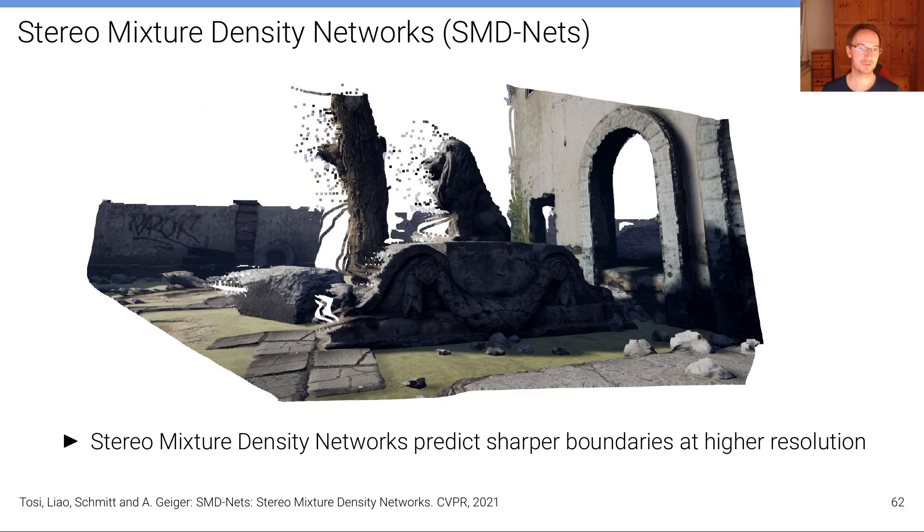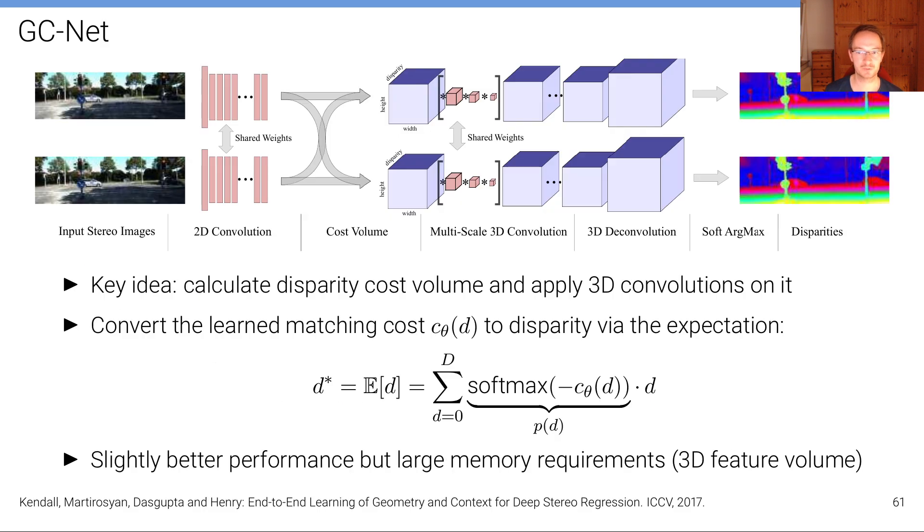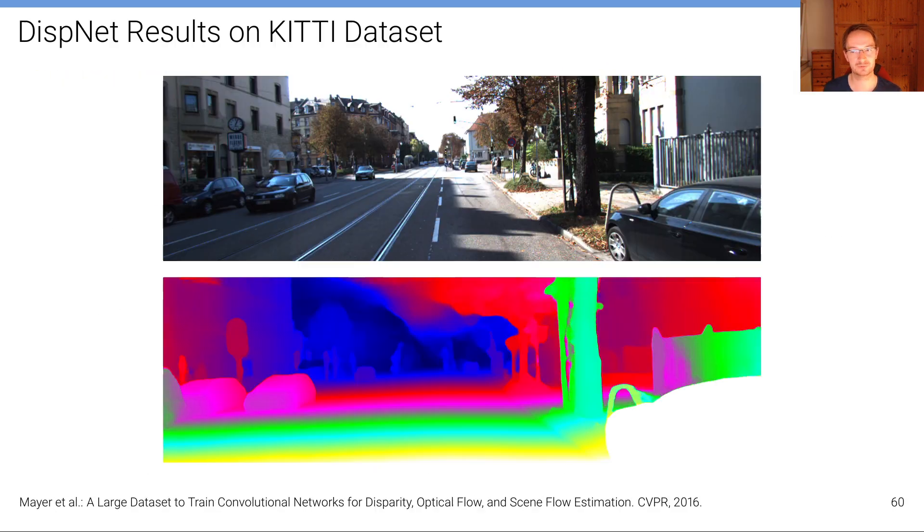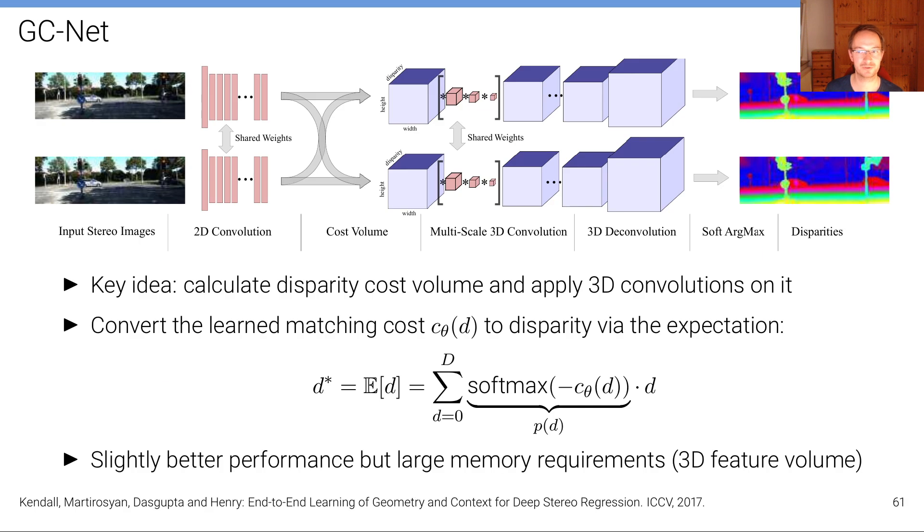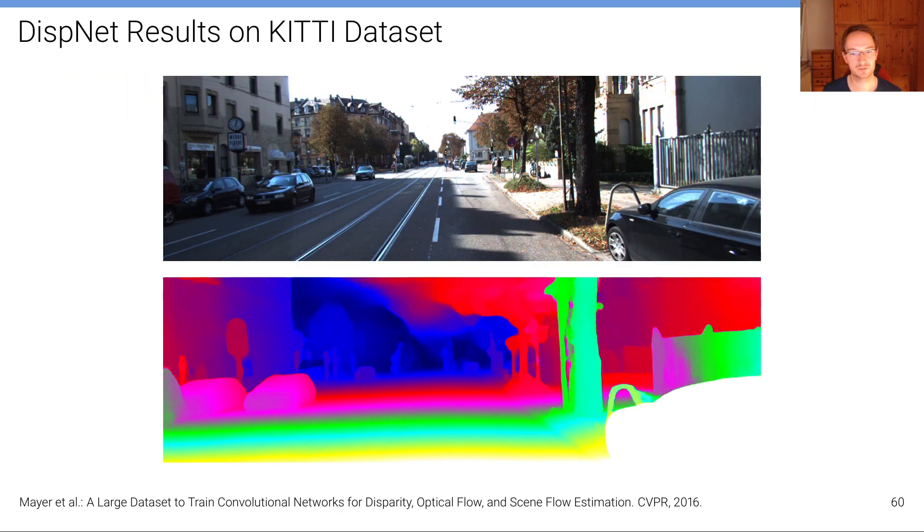Now as a final example that I want to show you while there's many more examples, many more works that have been done in that area, is so-called Stereo Mixture Density Networks. That's a rather recent work that we did in our group at CVPR 2021 and the idea of stereo mixture density networks is now to scale these models. All of these models are quite memory hungry